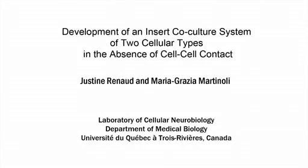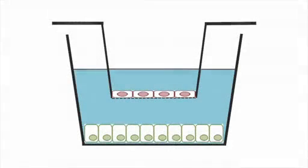The overall goal of this procedure is to create a cellular co-culture system of two cell types using inserts with a permeable membrane, thus allowing the diffusion of secreted soluble factors. This is accomplished with a series of steps that finally place inserts containing one cell type in a multi-well tissue culture plate containing a second cell type.